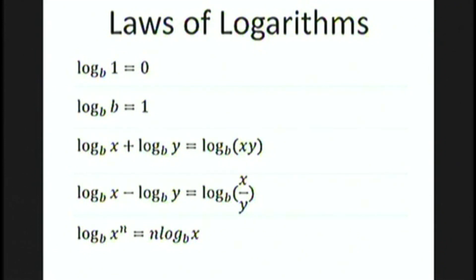Let's quickly go over some basic laws of logarithms. So first we have log base b of 1 is equal to 0. This follows from the fact that the base b to the exponent of 0 is 1. Anything to the 0 power is 1. Log base b of b equals 1 because b to the 1 is equal to b.